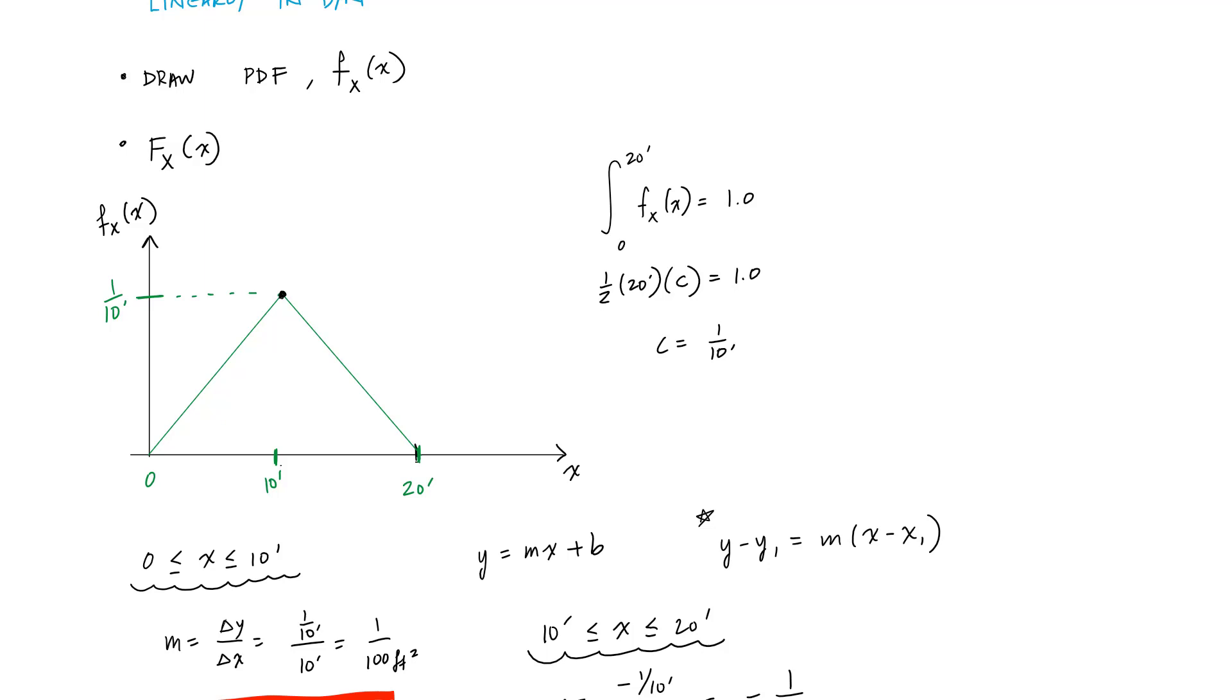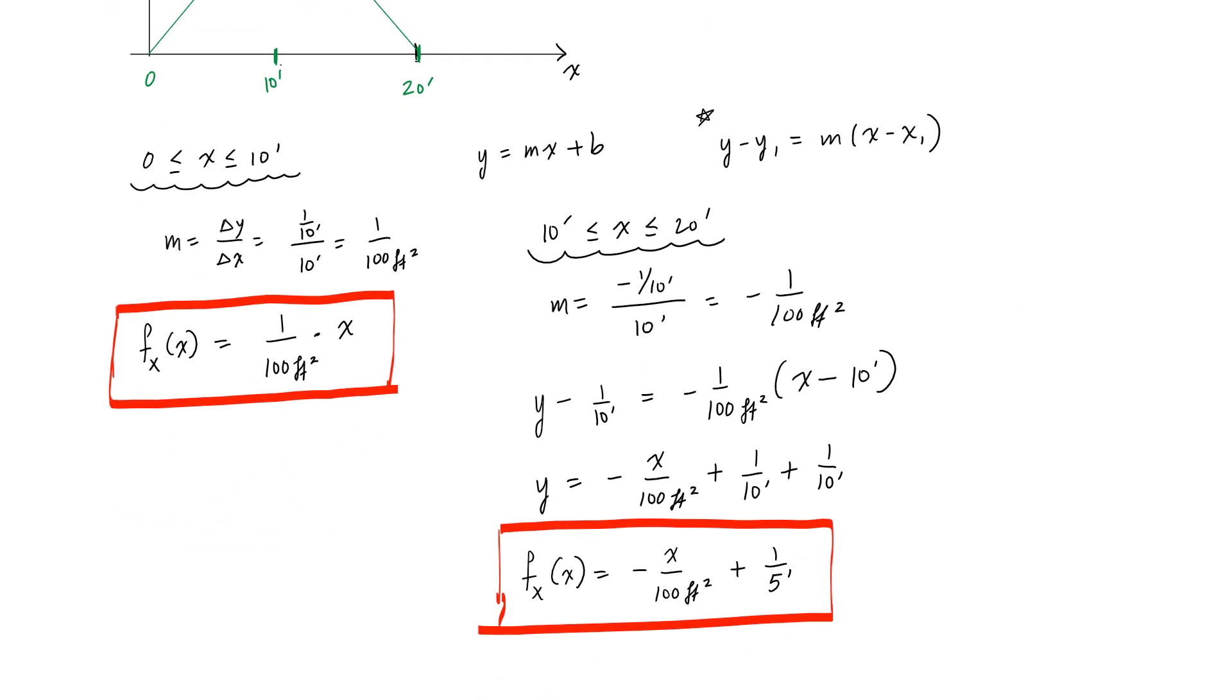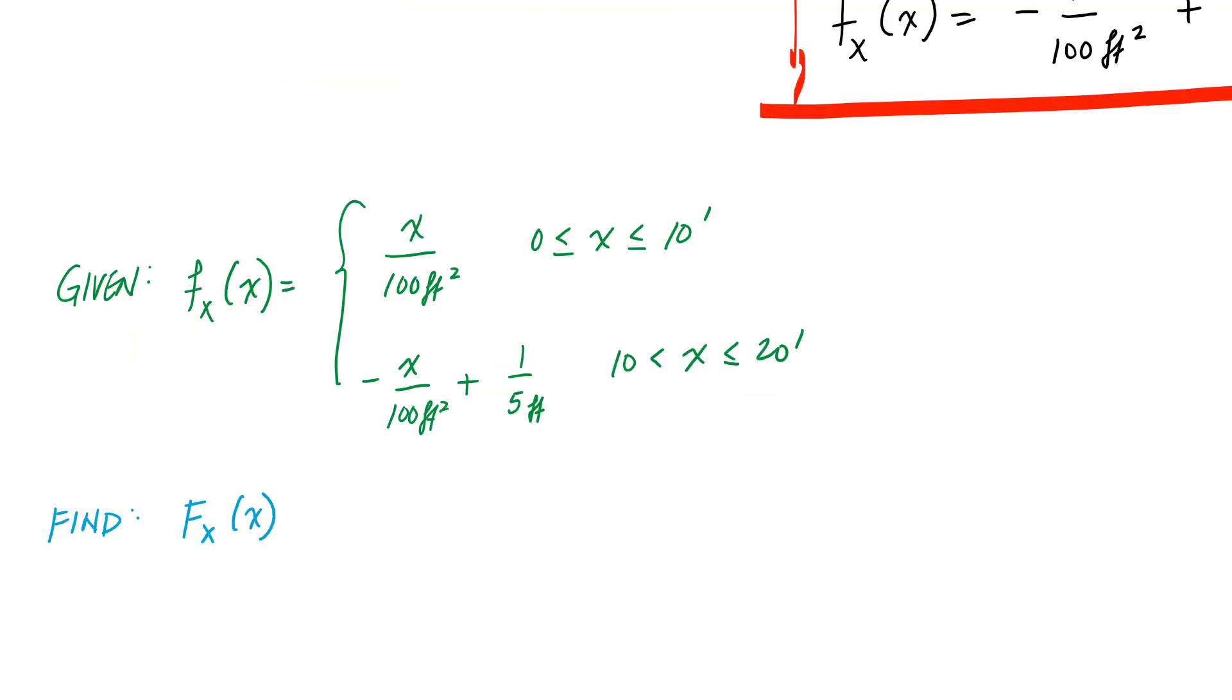Alright, so to wrap up this example, what we had done was we had this triangular PDF and we found the equations associated with each of these lines here from 0 to 10 feet and then from 10 to 20 feet. And what we'd like to do now is determine the CDF of the random variable x. So this is what the problem is now. It's given this PDF, find the CDF.